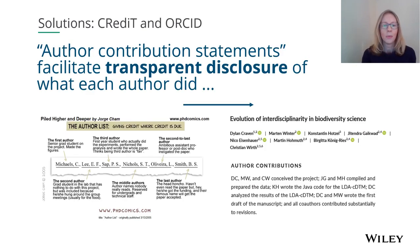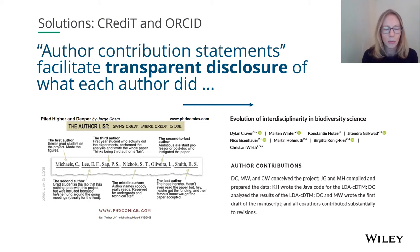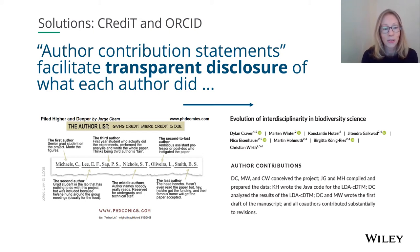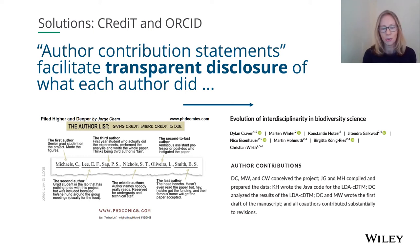Many of you may be familiar with author contribution statements, which are quite common now in journal articles and facilitate transparent disclosure of which author did what on the paper. This moves us away from a situation — illustrated by a cartoon on the left — where we can't really know who did what from the author order alone. For example, perhaps the first author was the senior grad student who made the figures, but the third author really did a lot of the experiments, performed the analysis, and wrote the whole paper, yet thinks being third author is fair. We're moving from that situation to one on the right where we can clearly see who contributed what.